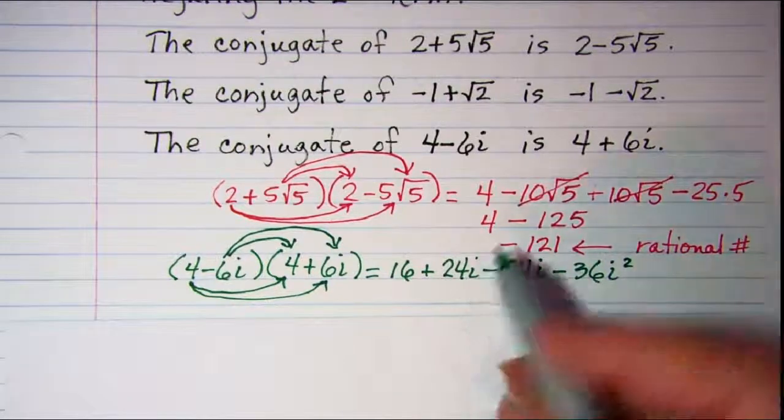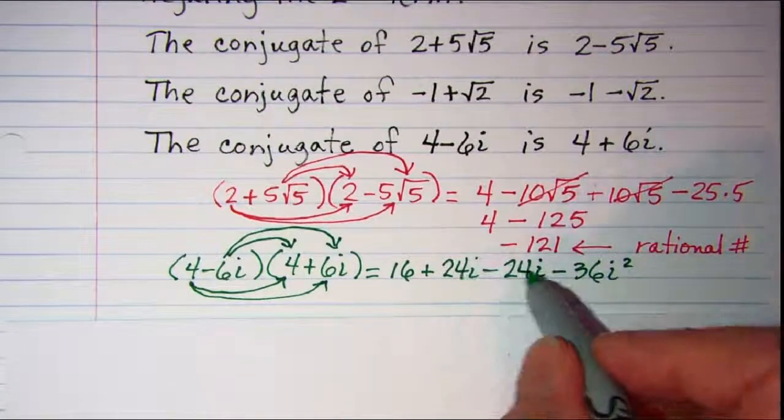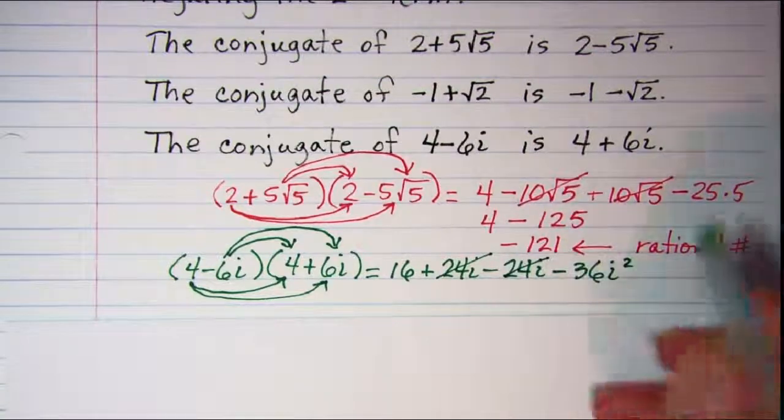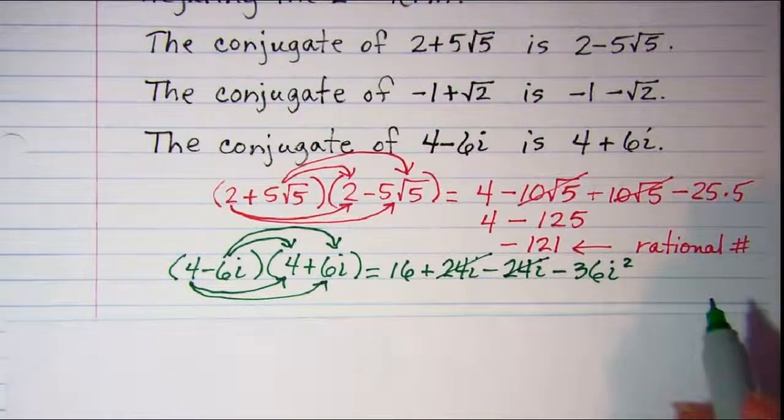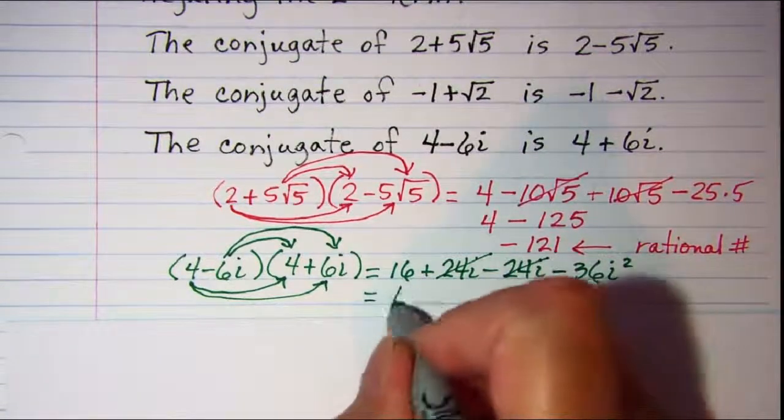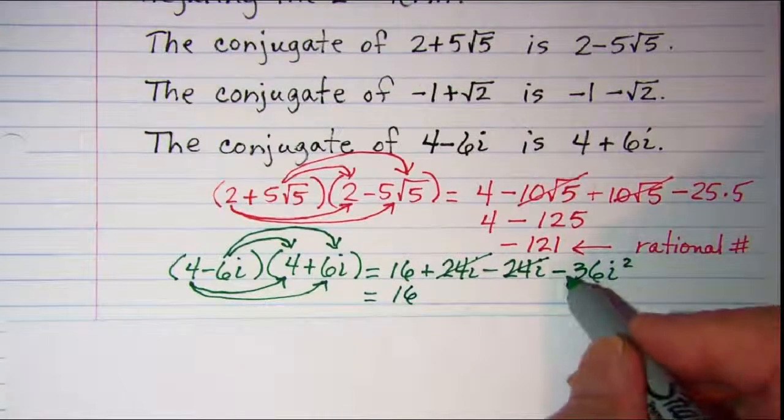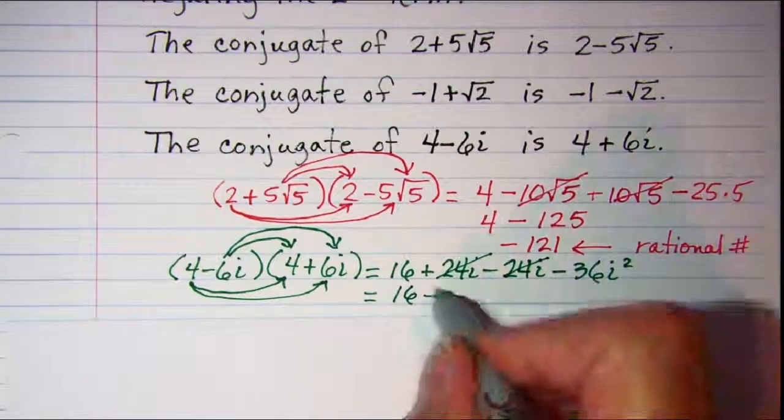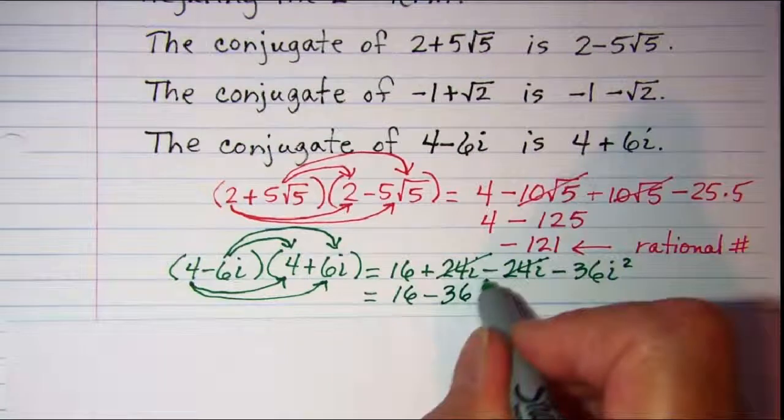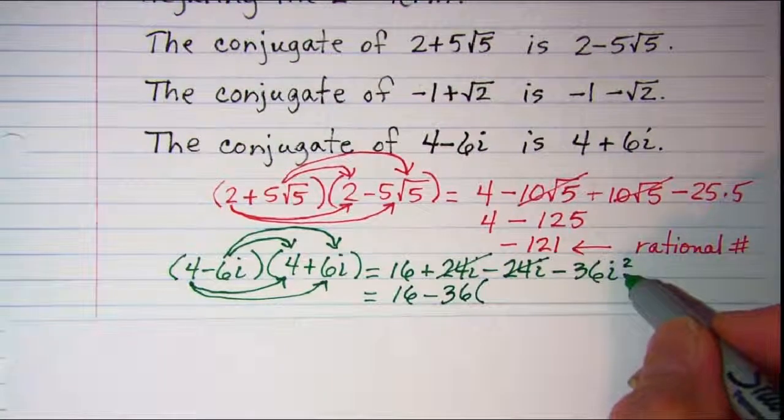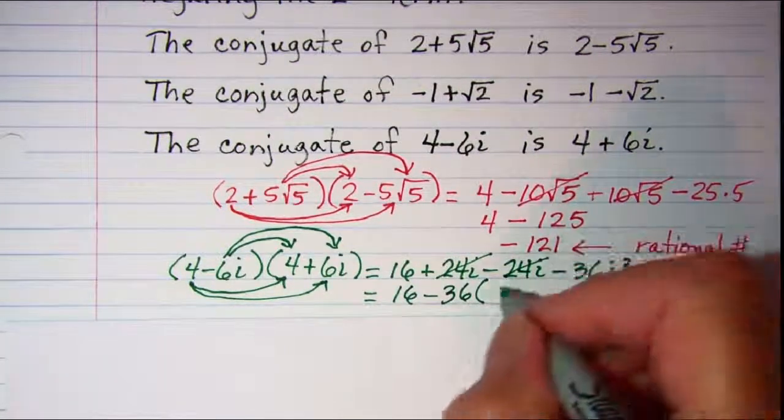Again, our middle terms, one's positive, one's negative, those cancel. So that always happens when you multiply conjugates. And we end up with 16 minus 36 times, and we know that i squared is defined as negative 1.